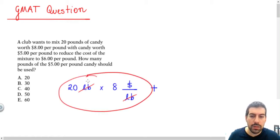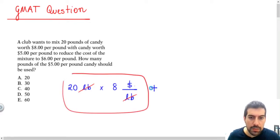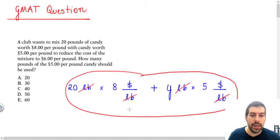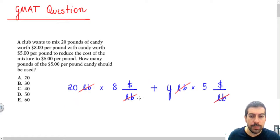And you will combine this cost with the cost of an amount that you don't know at first. Let's call it, for example, Y pounds, costing $5 per pound. So if we do that, we have the total cost of this mixture of candies. But we are doing this to reduce the cost of the mixture to $6 per pound.